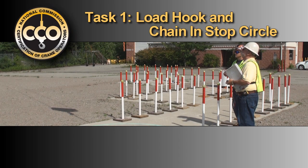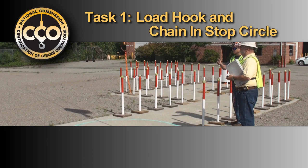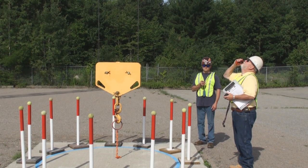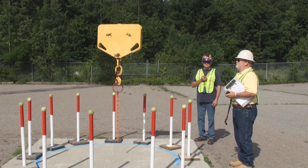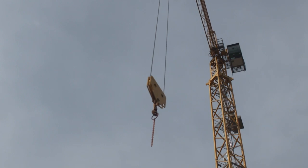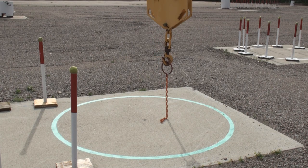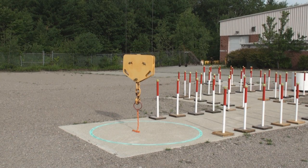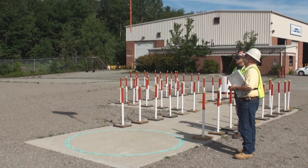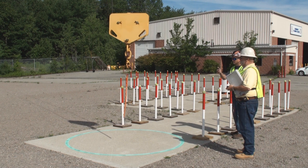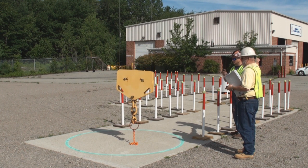Task 1: Load hook and chain in stop circle. Optimum time for this task is 1 minute 30 seconds. At the examiner's indication to start, at which point timing will begin, raise the chain at least 10 feet off the ground to clear all obstacles and personnel. Bring the chain from its starting position at the start circle over to the stop circle and land the chain fully inside the circle. Once the chain makes contact with the ground inside the circle, do not lift the chain off the ground. Avoid contacting anything but the ground inside the stop circle. Once the chain is under control inside the circle, the examiner will give you a stop signal and timing will end.